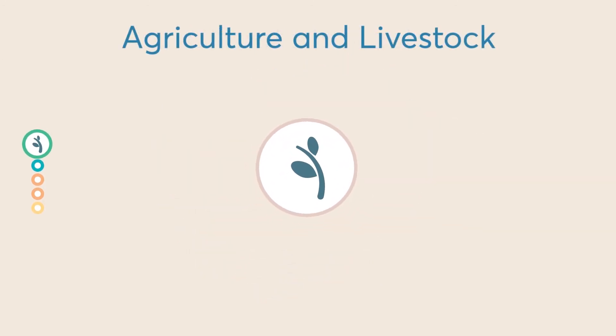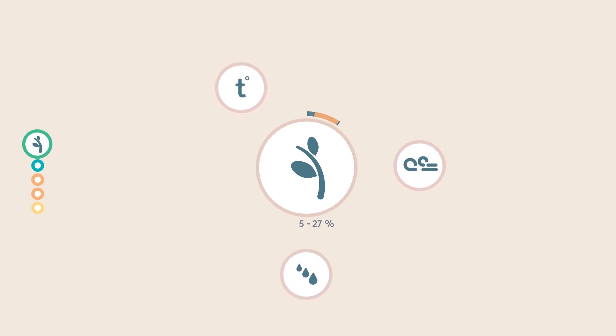Firstly, agriculture and livestock, which make up between 5 to 27% of GDP of the Central Asian countries. It is expected that climate stresses will bring agricultural losses in the region and thus decrease food security.